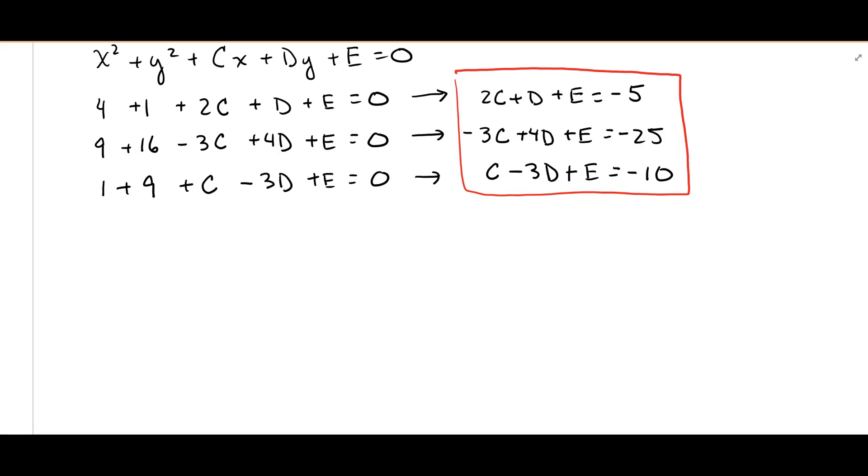So we're going to do reduced row echelon form of our matrix. I'm just going to pull off my coefficients and my constants. So I've got 2, 1, 1, and then negative 5, negative 3, 4, 1, negative 25, and then 1, negative 3, 1, and negative 10.